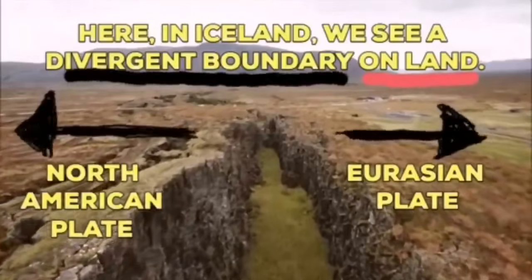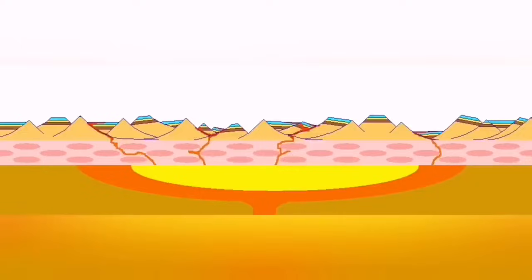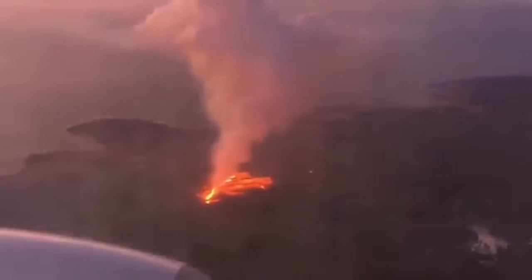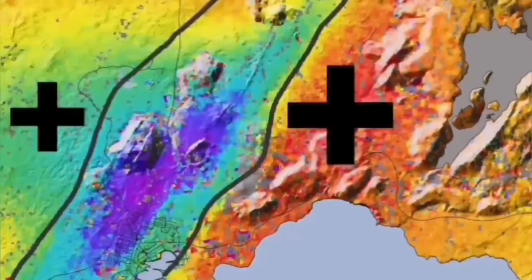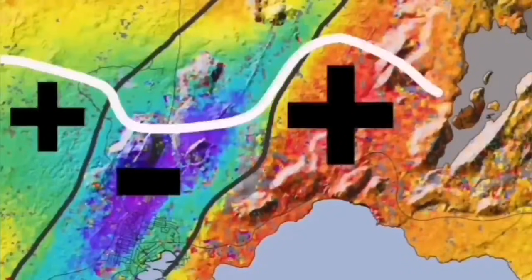Eurasian plate and North American plate, through these grabens, this is the hollow that you see in the middle, are separating. And through them, the magma forms and rises and creates lava, eruption of the volcano, this is what we call it.